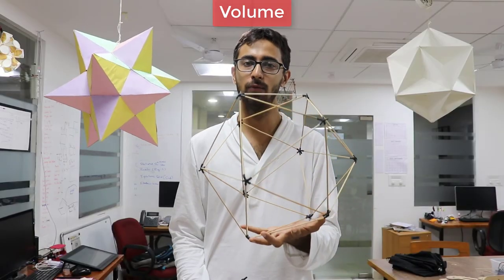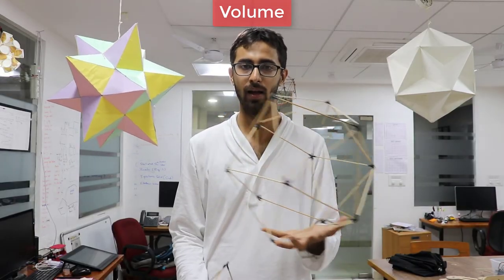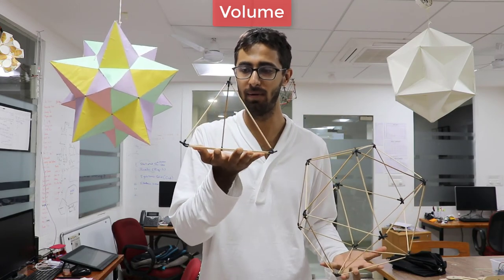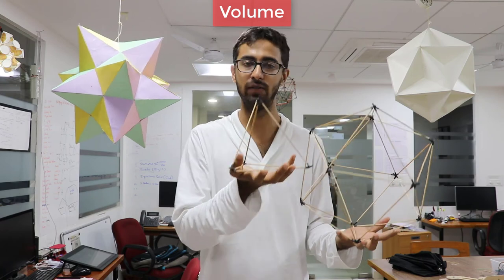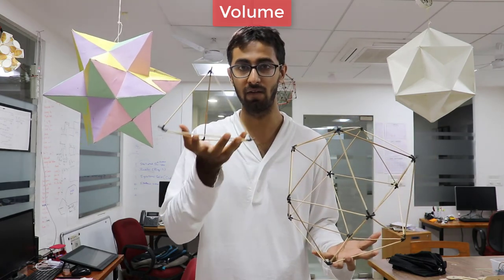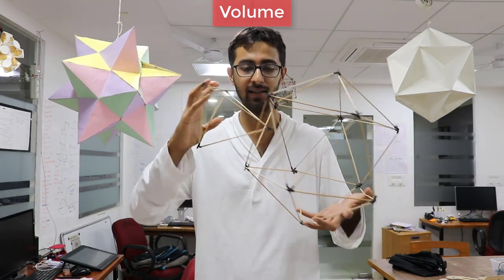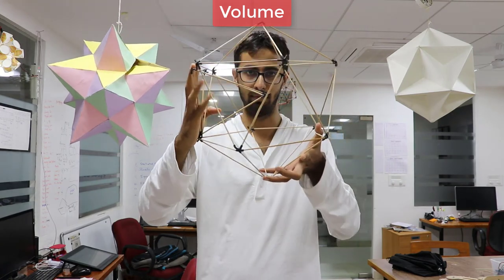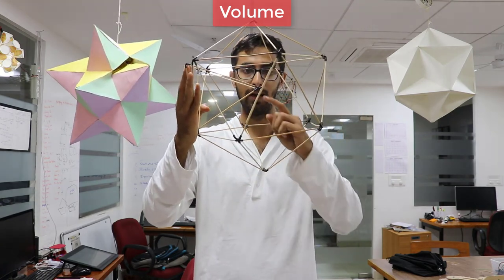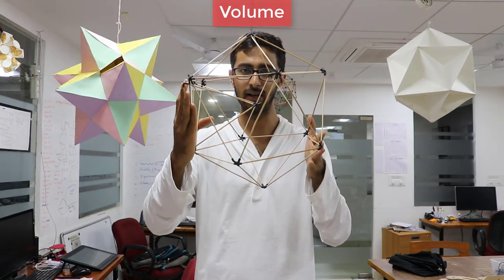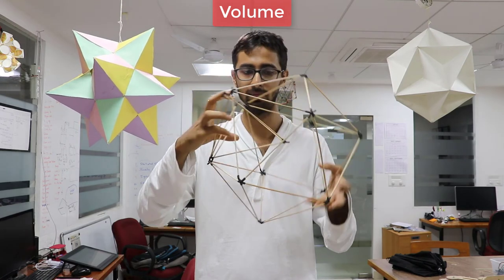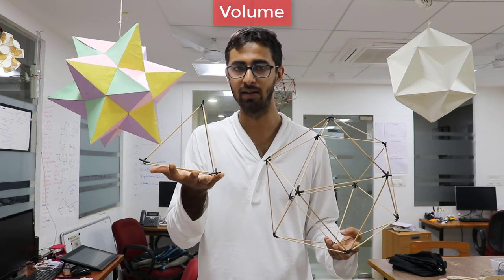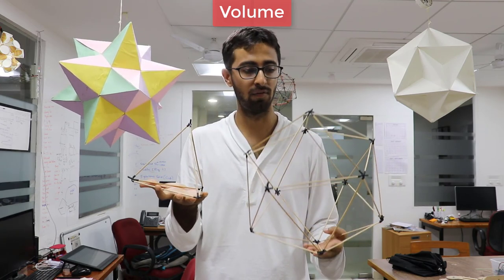Now, to find out the volume of this icosahedron, I have taken one triangular pyramid such that its base is exactly the face of the icosahedron. If I fit this triangular pyramid inside the icosahedron, I find that the apex touches at exactly the center of the icosahedron. So if I have 20 of these, I find that they take up the entire volume of the icosahedron.